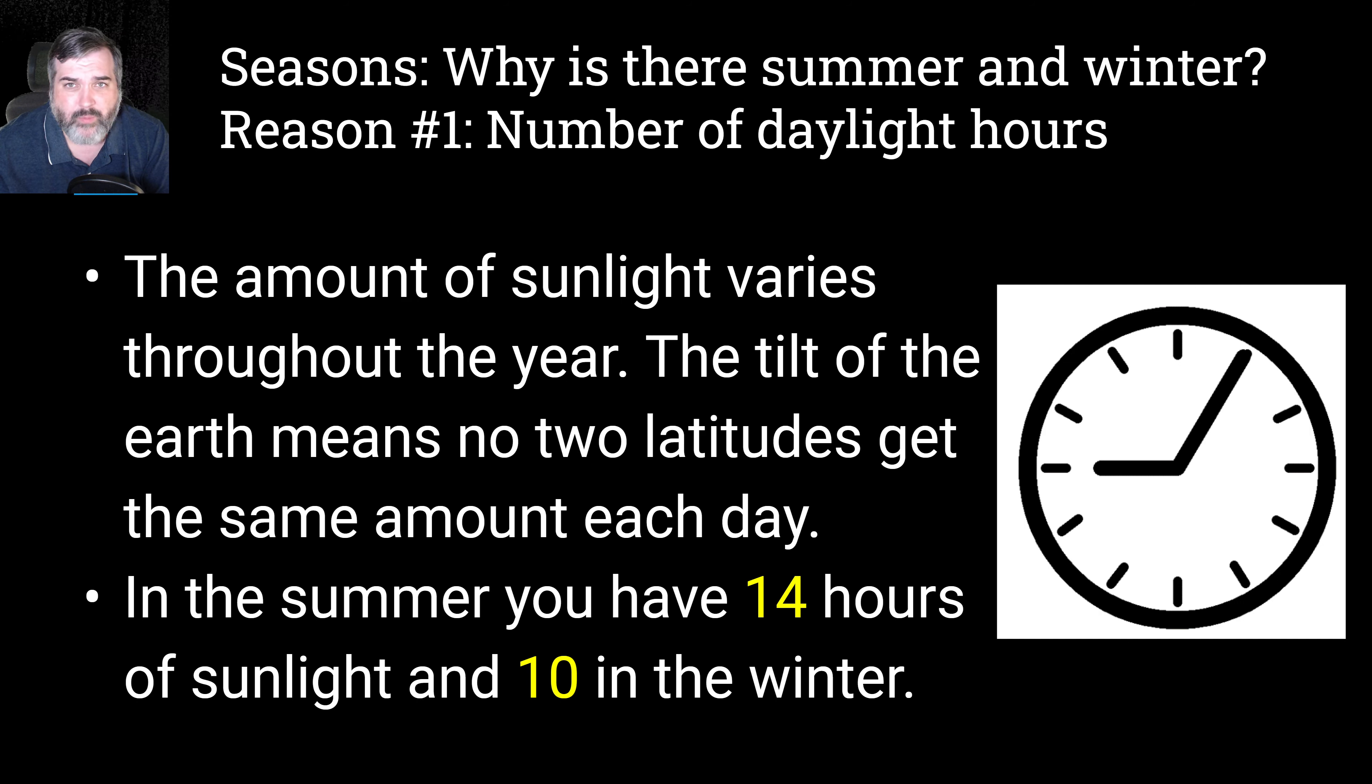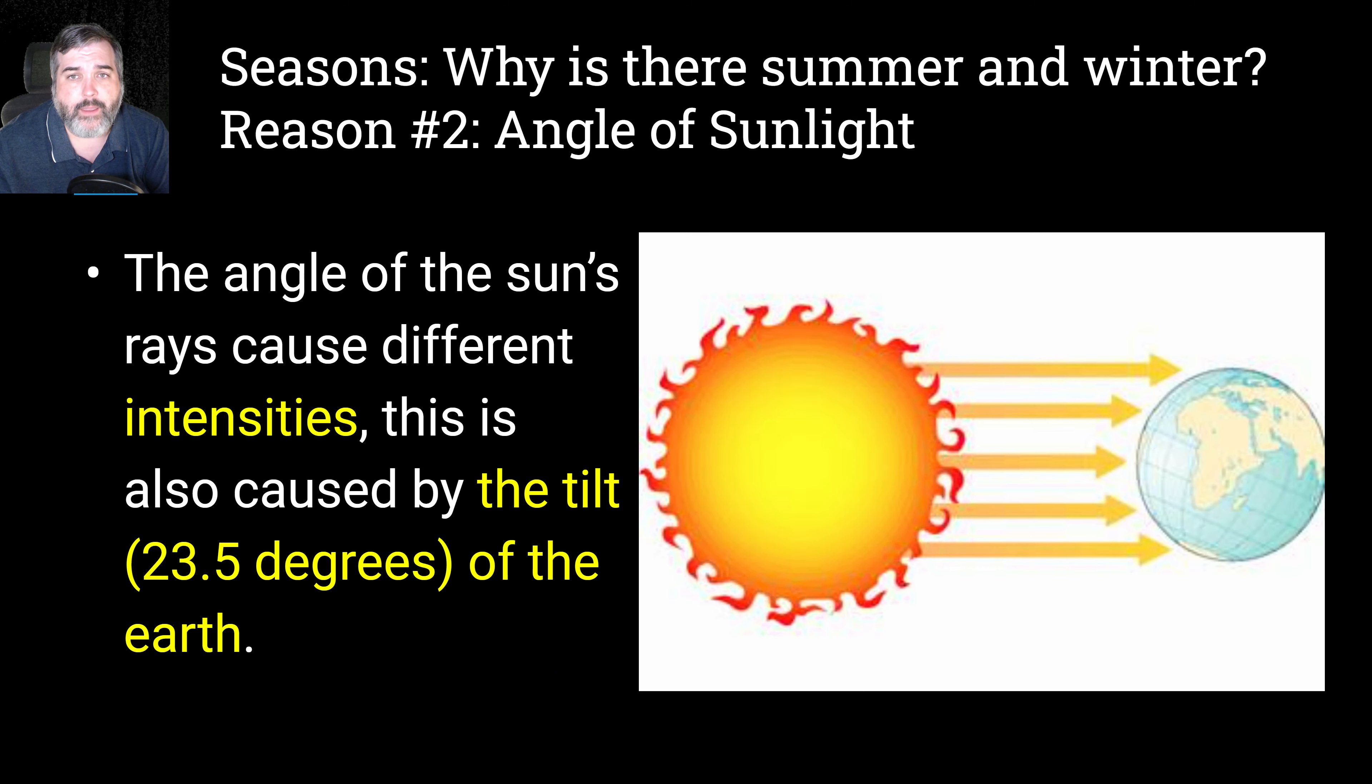So why is there summer and winter? First off, there's the number of daylight hours. The amount of sunlight varies throughout the year. The tilt of the Earth means that no two latitudes get the same amount every day. In the summer, we have about 14 hours of sunlight and about 10 hours in the winter. So it's very lopsided as opposed to 12 and 12. The other reason why there's summer and winter is the angle of the sun's rays. It's not our proximity to the sun. It's the angle that we're at. So, like, for instance, when the southern hemisphere is closer to the sun, for them, it's summer. And for us in the northern hemisphere, it would be winter because this area of effect is much more diluted. And so the sun's rays get spread out over a longer distance and have less impact.